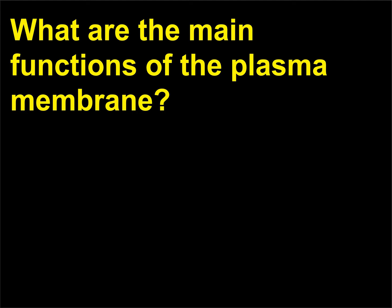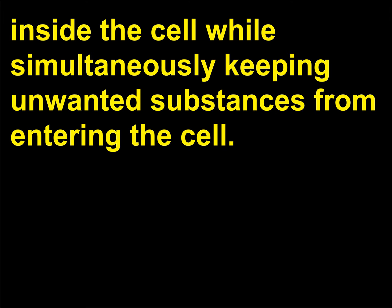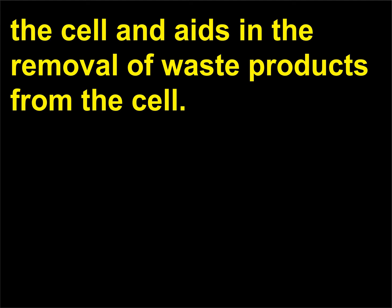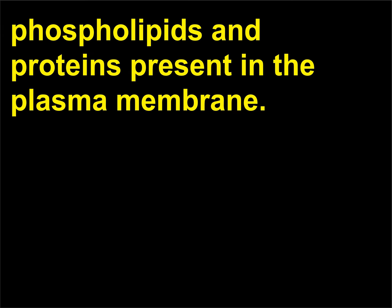What are the main functions of the plasma membrane? The main purpose of the plasma membrane is to provide a barrier that keeps cellular components inside the cell while simultaneously keeping unwanted substances from entering the cell. The membrane allows essential nutrients to be transported into the cell and aids in the removal of waste products from the cell. The specific functions of a membrane depend on the kinds of phospholipids and proteins present in the plasma membrane.